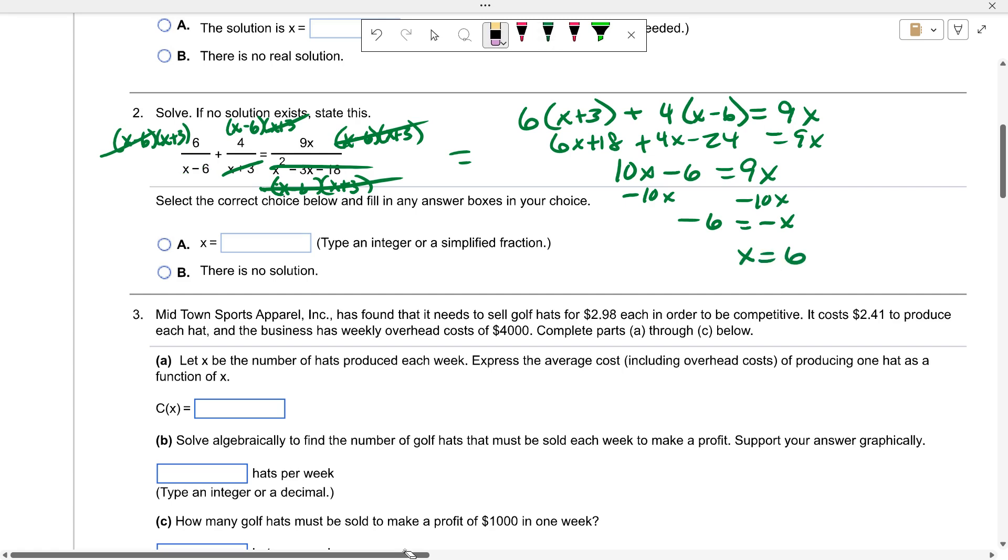If I plug 6 into this equation, what happens? You get zero in the denominator. If six is my only solution and that doesn't work, then there is no solution to that equation. Remember, anytime you're working with rational equations you always have to check your answers. Always, always, always.